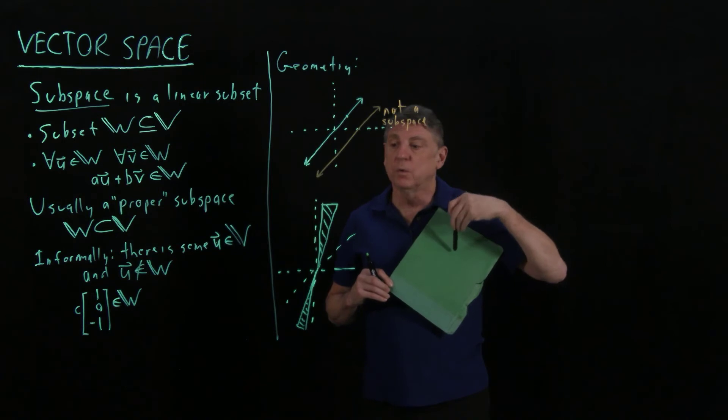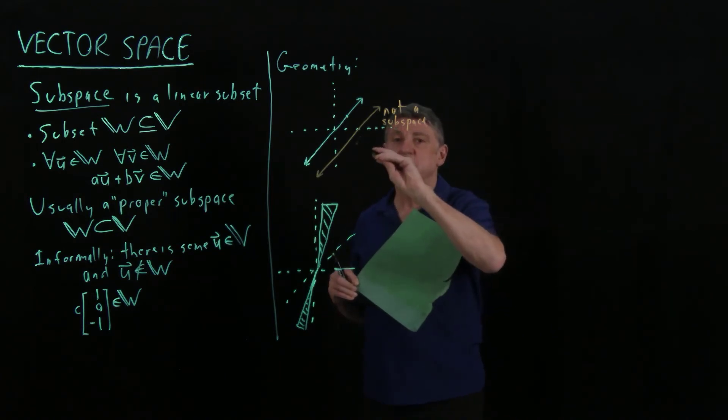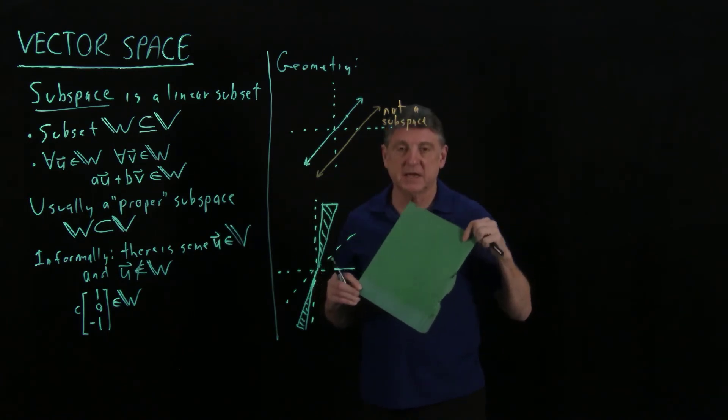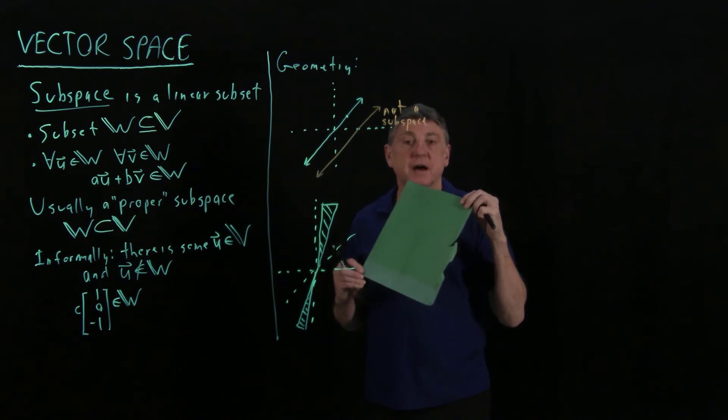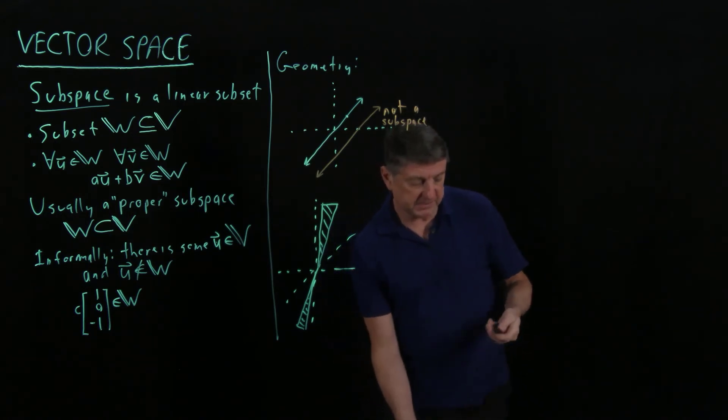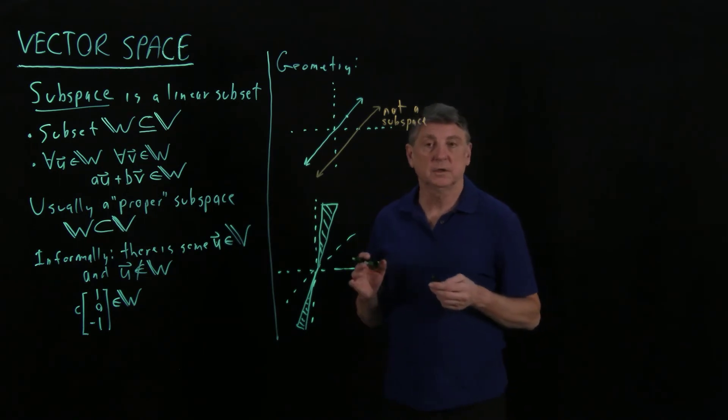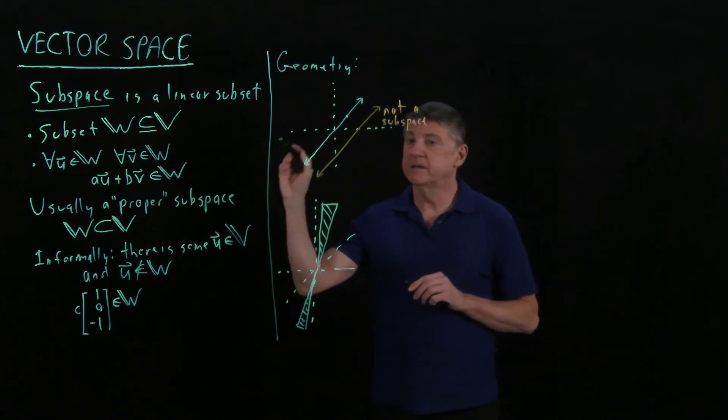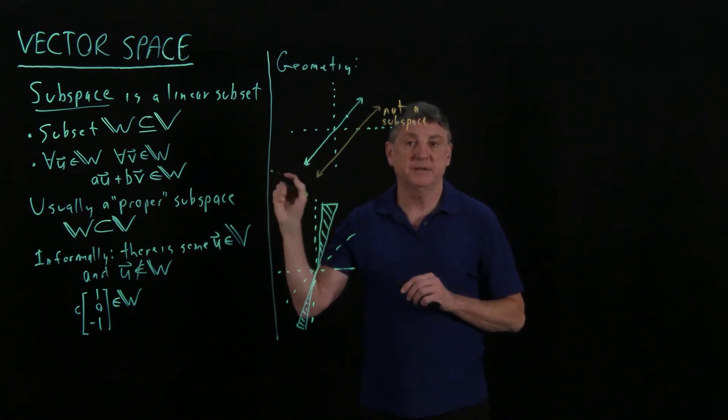And so what that means is that a one dimensional subspace has the geometry of a line that goes through the origin, and a two dimensional subspace has the geometry of a plane that goes through the origin. And this idea of must contain the origin is critically important. It's an absolute essential because the zero vector is a member of every vector subspace.